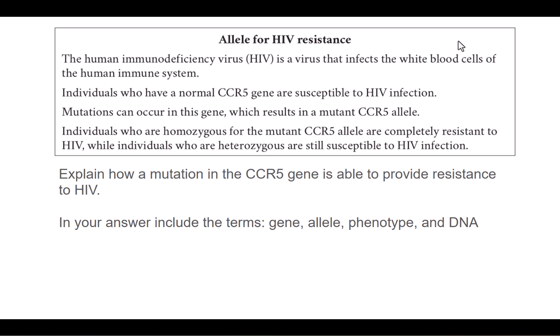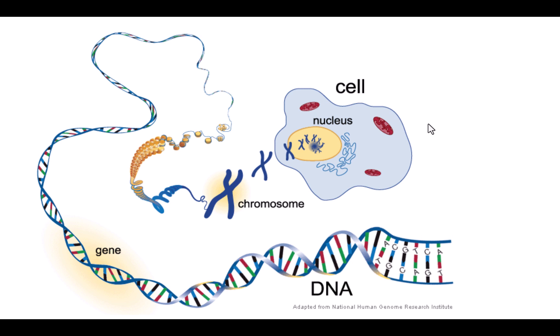The first question asks us to explain how a mutation in the CCR5 gene is able to provide resistance to HIV, and it gives us a number of terms we've got to include. To help us understand this, here's a pretty standard diagram showing a cell, a nucleus, and the chromosomes — these structures held inside the nucleus. That's made of DNA and provides the coding for proteins in the body. Each gene or region on that chromosome provides a specific set of instructions for one specific protein to be made, and that protein will go on to relate to characteristics expressed in that organism.